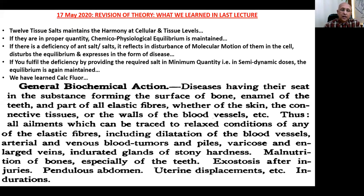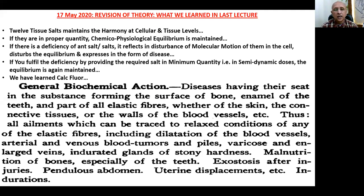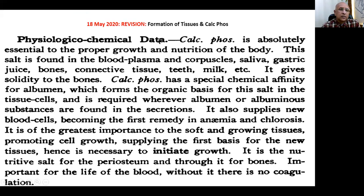We have learned the first remedy, Calcarea Fluor, which has its seat of disturbance specifically on the surface of bone, enamel of teeth, elastic fibers of skin, connective tissue, or walls of blood vessels, and related pathology is treated successfully with Calcarea Fluor. Thereafter we learned another remedy, Calcarea Phos, along with the theory of how tissue formation happens with the help of inorganic salts and how they mix in different tissue formation as well as degradation.